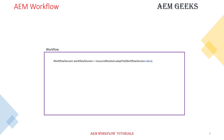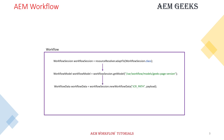To trigger a workflow in the backend, first you need a workflow session. Once you have the workflow session, you will get the workflow model by passing the exact path of your runtime model. Then you can get workflow data using the workflow session — this is the payload of your workflow. If a page is the payload, you pass the path of that page. Once you have both workflow model and workflow data, you can start the workflow using the workflow session.